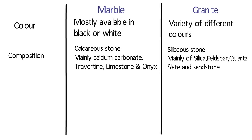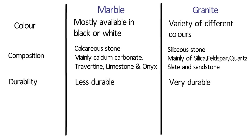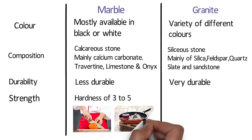In terms of durability, marble is less durable, whereas granite tends to be very durable and easy to clean. Marble has a hardness of 3 to 5 on the Mohs scale, and common kitchen tasks such as cutting and contact with hot pans and dishes may also damage marble.